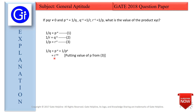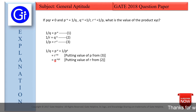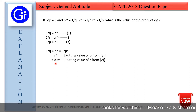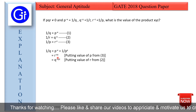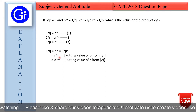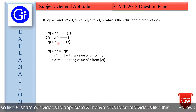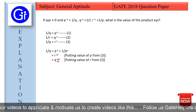This can also be written as 1 upon R raised to the power XZ. Now, instead of 1 upon R, we substitute Q raised to the power minus Y from the second equation. It then becomes Q raised to the power minus XYZ, because XZ was already present and multiplying by Y gives minus XYZ.